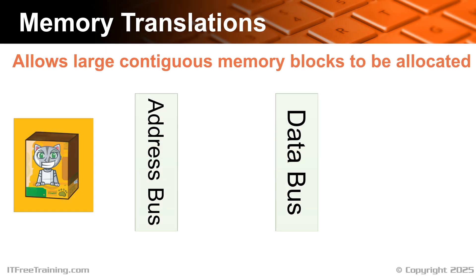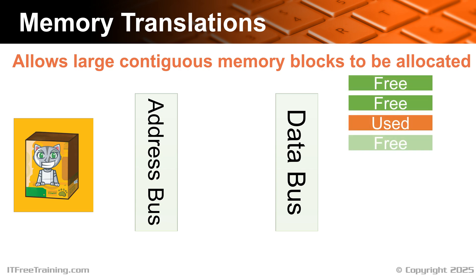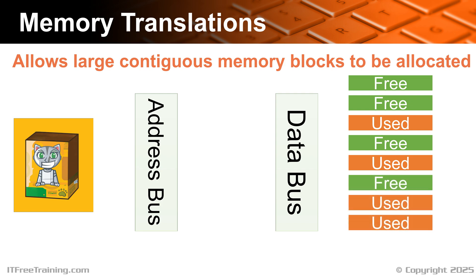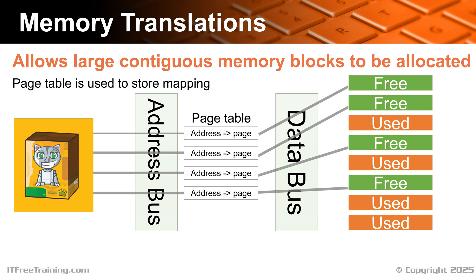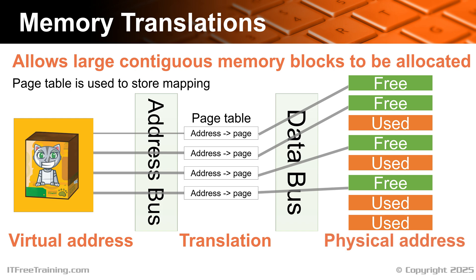Modern computers use memory translation to allow contiguous memory blocks to be allocated even when memory is fragmented. Essentially, what occurs is the software has a physical address which is recorded in a page table. The page table is used to map the address to the memory and store those mappings. The application has been given a virtual address, which is translated using the page table to a physical address. The application sees a contiguous block of memory; however, in reality this block of memory could be spread out randomly across the memory module. The whole process is seamless and transparent to the application.